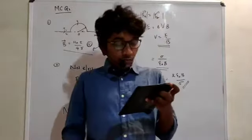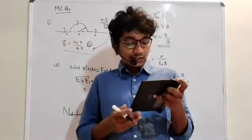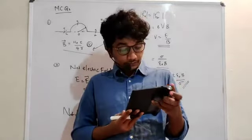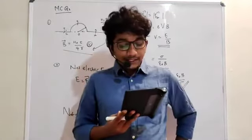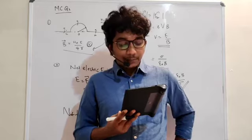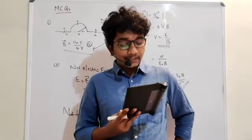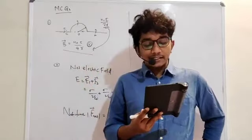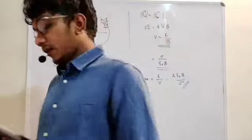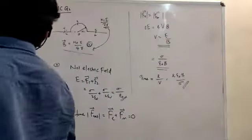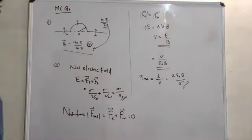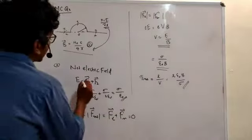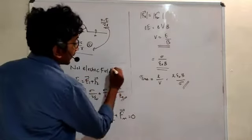Question number two: an electron moves in a straight line inside a charged parallel plate capacitor of uniform charge density sigma. We need to find the time taken by the electron to cross the capacitor when the plates are kept under a constant magnetic field of induction B.